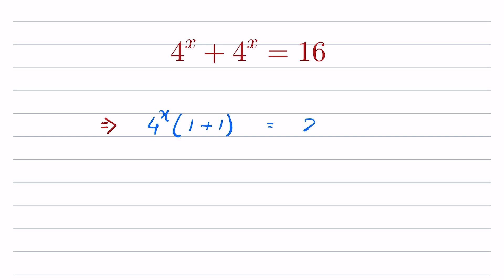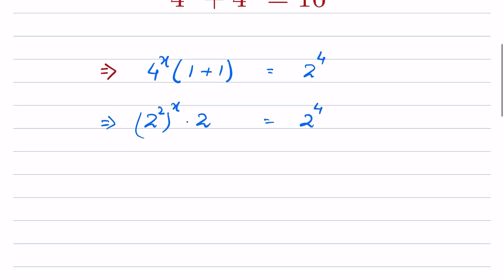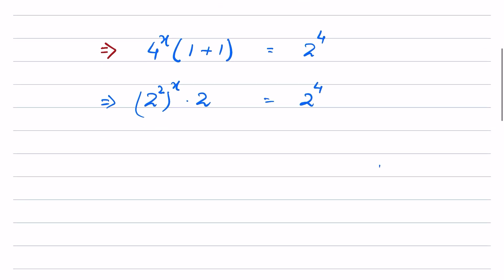We write 16 as 2 to the power 4, and 4 again as 2 to the power 2, so (2^2)^x times 2 equals 2 to the power 4. Now using the identity: (a^m)^n = a^(m·n), this becomes 2 to the power 2x.